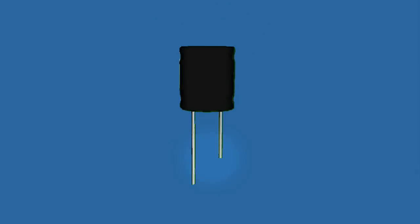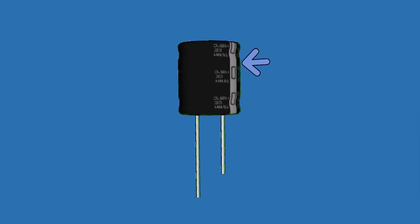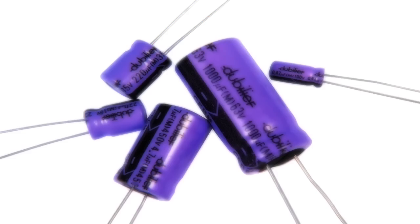On an electrolytic capacitor, the negative lead is the shorter lead, also indicated by these symbol markings on the side of the capacitor. There are many different sizes, shapes, and types of capacitors.